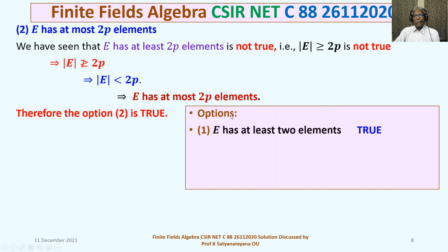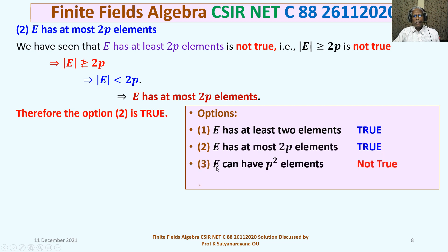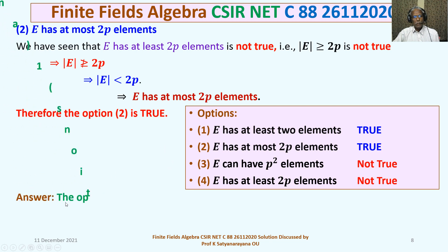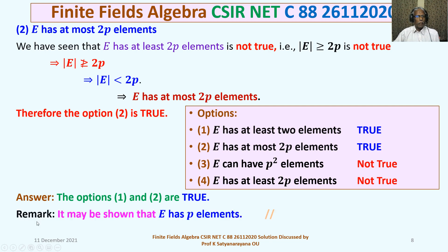In summary, Options 1 and 2 are true, while Options 3 and 4 are not true. Our final answer is that Options 1 and 2 are correct. As a remark, it may be shown that E has exactly P elements — those interested can try to prove this. That concludes the solution of this problem from the Algebra section on finite fields from the CSIR Net Exam. Thank you.